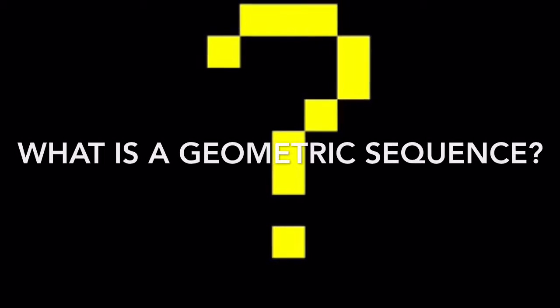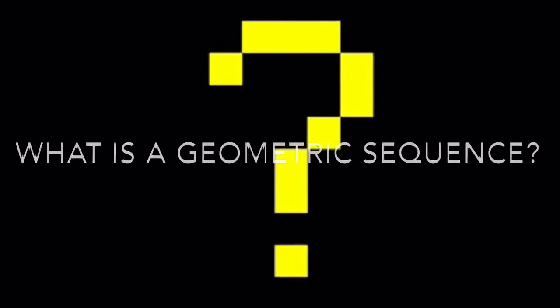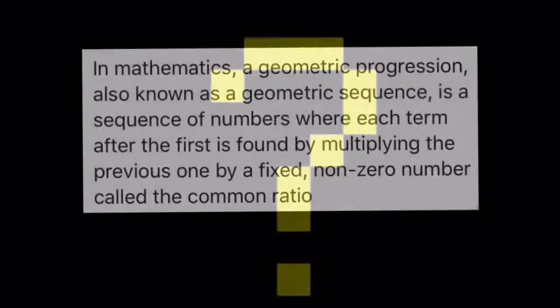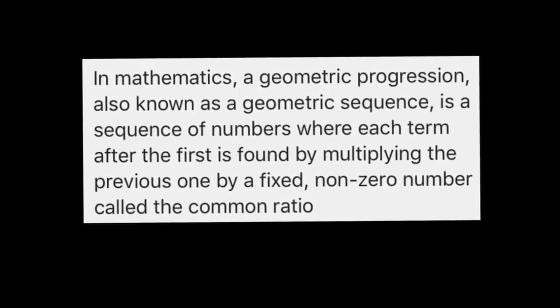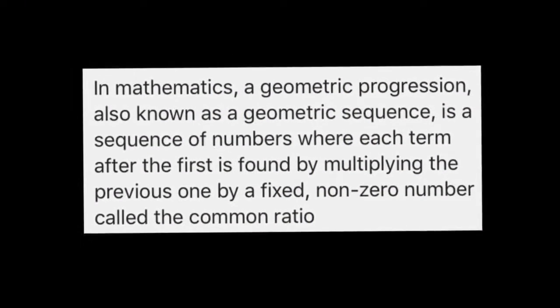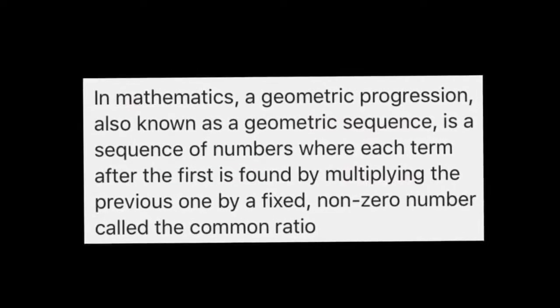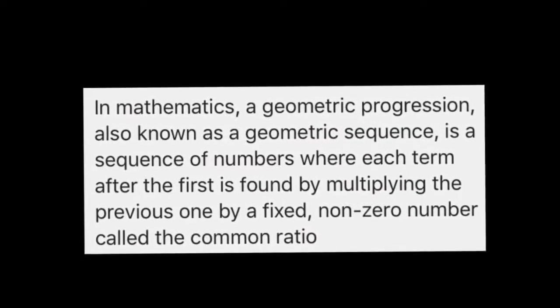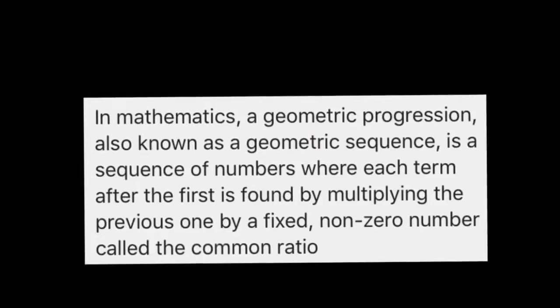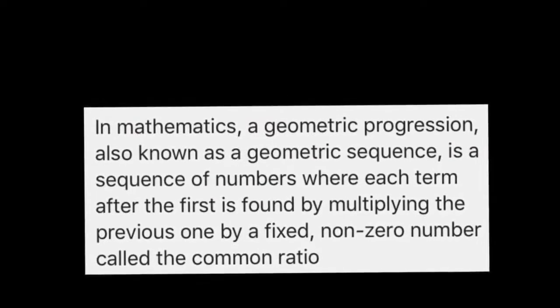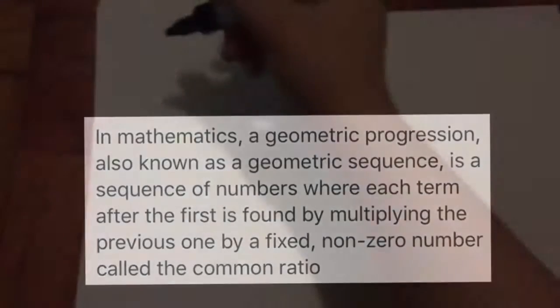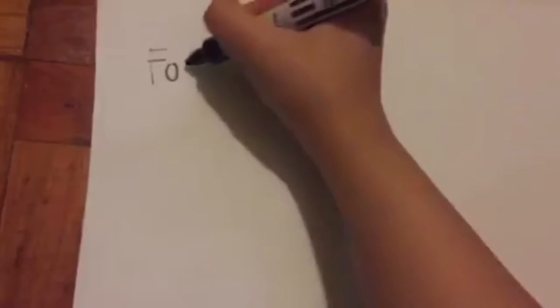In mathematics, a geometric progression, also known as a geometric sequence, is a sequence of numbers where each term after the first is found by multiplying the previous one by a fixed, non-zero number called the common ratio.